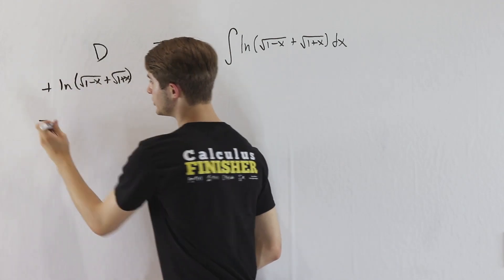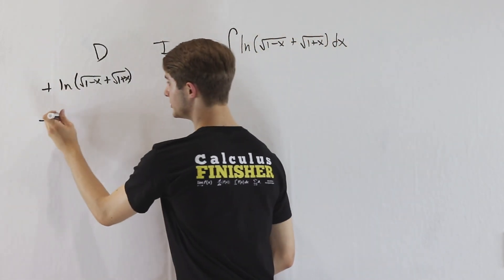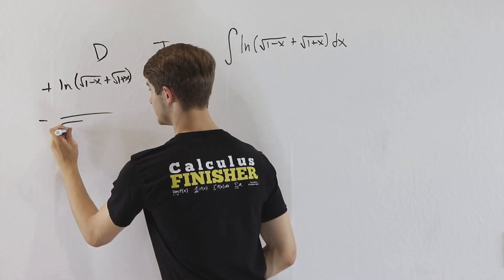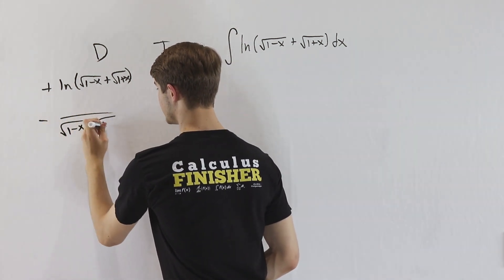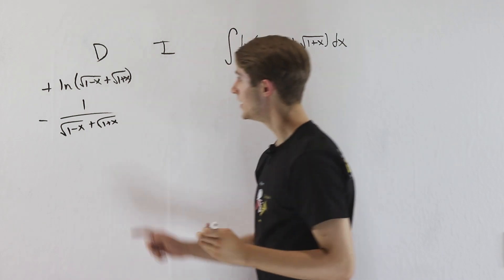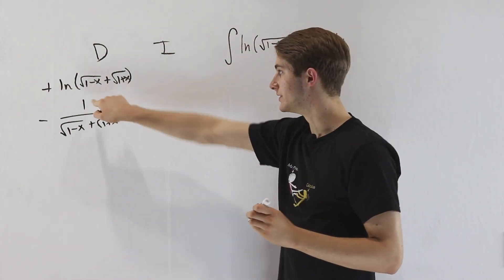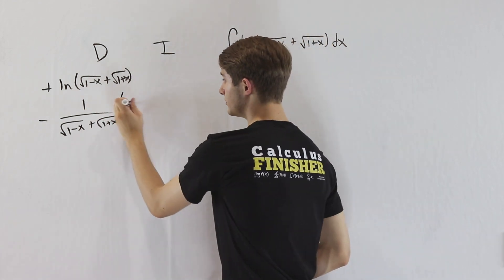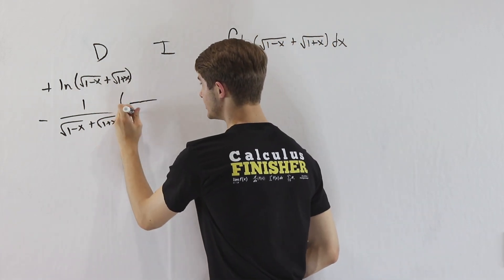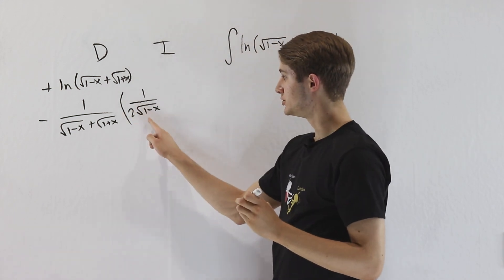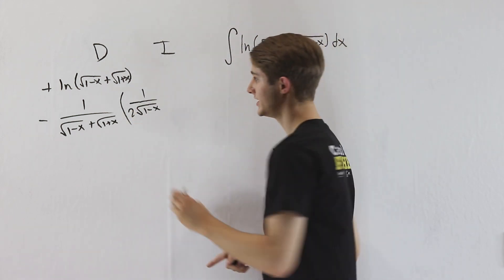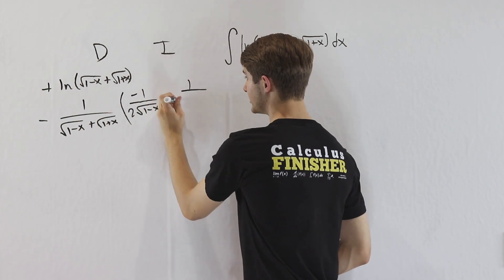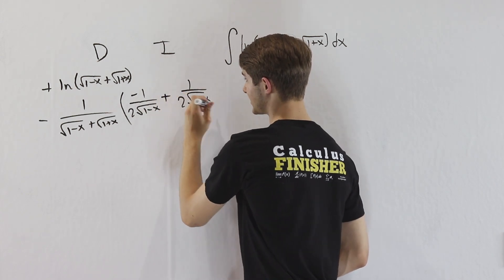Now, if we want to take the derivative of this, first we'll do the derivative of the outside, which will be 1 over the square root of 1 minus x plus the square root of 1 plus x. Then we multiply by the derivative of the inside. For the first square root, we get 1 over 2 times the square root of 1 minus x. But then by the chain rule, we have the derivative of 1 minus x, which is negative 1. And for the second term, we get 1 over 2 times the square root of 1 plus x.